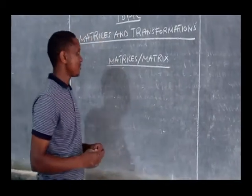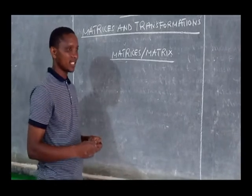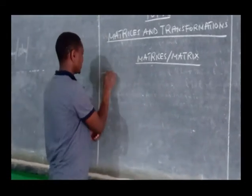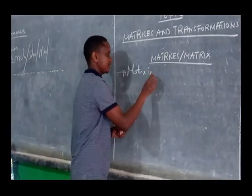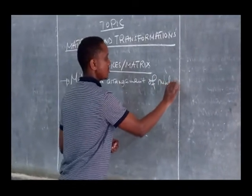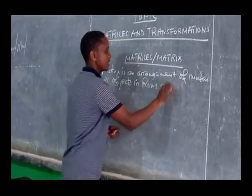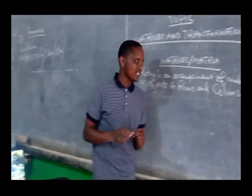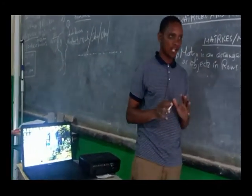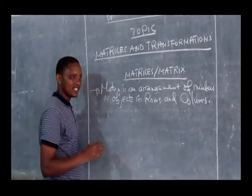Today, first we are going to discuss about matrices or matrix. A matrix is an arrangement of numbers or objects in rows and columns. So once you arrange numbers or objects in rows and columns, that is the concept of matrices or matrix. Now let us get into the size or order of a matrix.